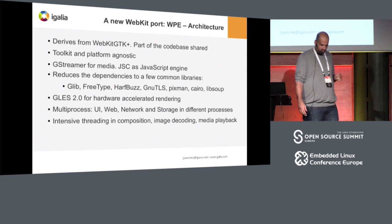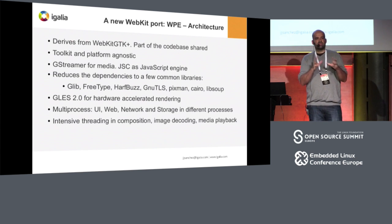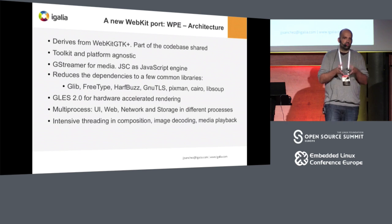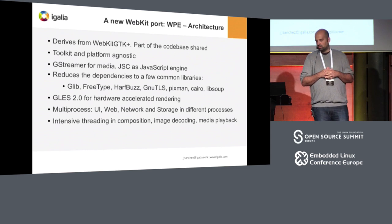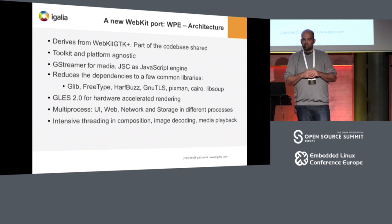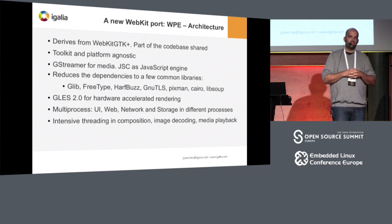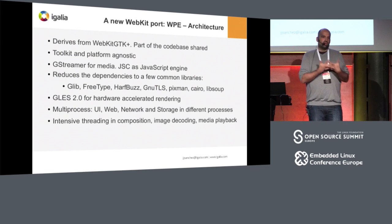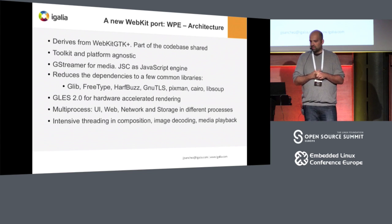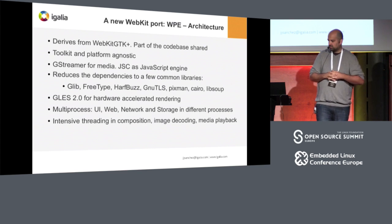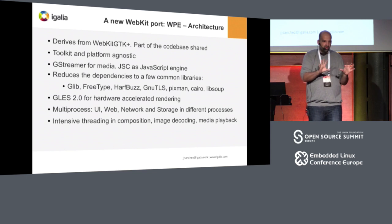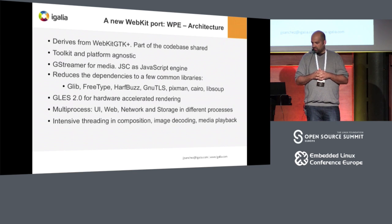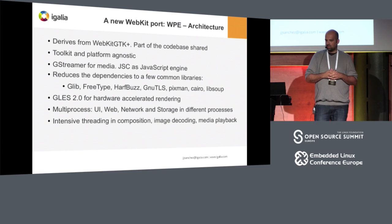How did we create this new port? We took WebKit GTK as a starting point — it's a very mature port maintained for 15 years. We wanted to use the stable parts, but rethink the whole structure: remove the toolkit layer completely so GTK disappears, and make it platform-agnostic in terms of the graphical stack. For media we use GStreamer, which is the obvious choice for Linux, and JavaScriptCore as the JavaScript engine. We reduced the list of dependencies to a few important libraries and use EGL for hardware accelerated rendering, so everything is connected to OpenGL.